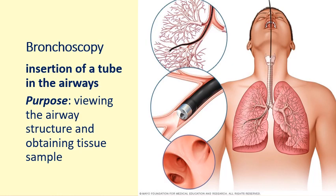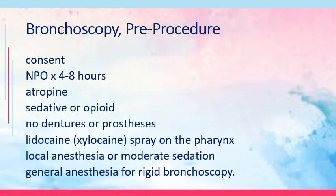Bronchoscopy involves the insertion of a tube into the airways to view the airway structure and obtain samples for biopsy. A fiber optic tube is inserted toward the bronchus to visualize the lower respiratory tract. Prior to bronchoscopy, consent is required and the patient is placed on NPO for 4 to 8 hours because instrumentation in the airway may activate the gag reflex, creating a risk of aspiration.